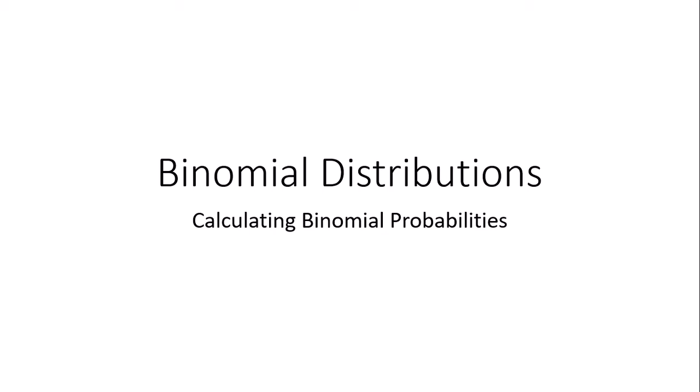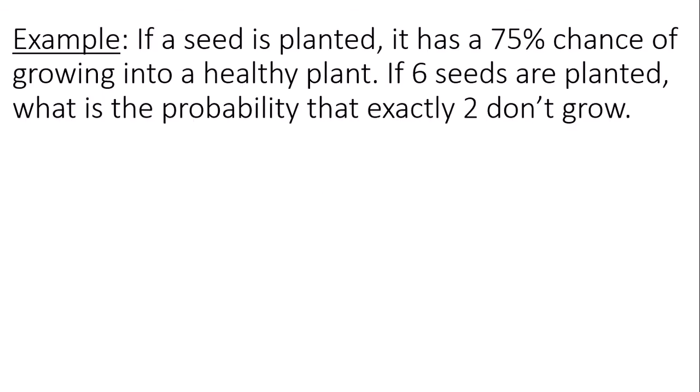This is a video on calculating binomial probabilities. If a seed is planted, it has a 75% chance of growing into a healthy plant. If six seeds are planted, what is the probability that exactly two don't grow?